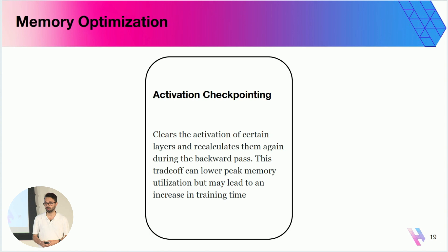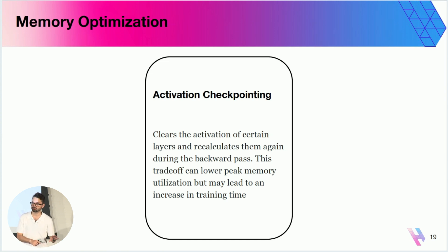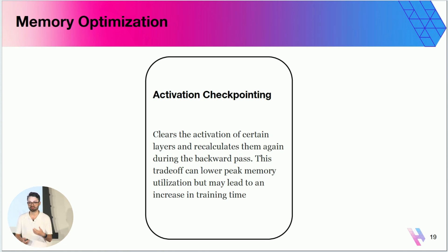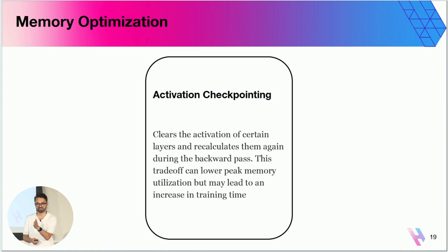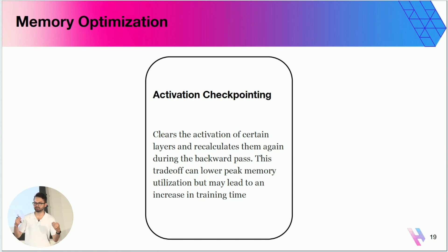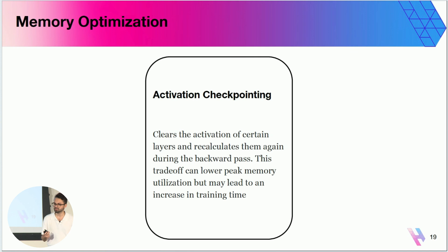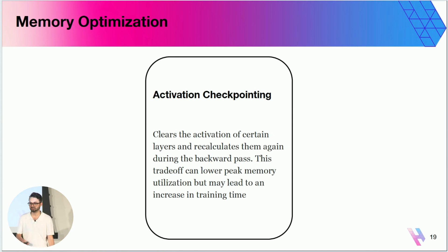Now I want to talk about memory optimization — what you can do on top of distributed training. One thing that's relatively easy to get started with is activation checkpointing. The idea is that it clears the activations of certain layers and recalculates them during the backward pass, so you can even recalculate your forward pass during the backward pass process. This is a trade-off: activation checkpointing reduces your peak memory usage, but it will also lead to more training time because you're recalculating activations again.